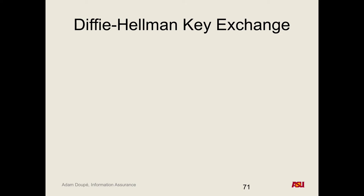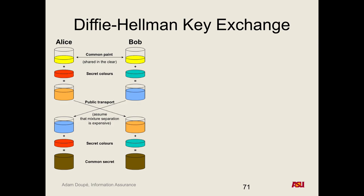The idea is that Alice and Bob want to exchange keys. They generate and communicate some shared public information, each keep some secret information, mix the public with their secret, share that result, and then each use their secret information to derive what ends up being the same secret key. This Wikipedia paint analogy is really helpful here.